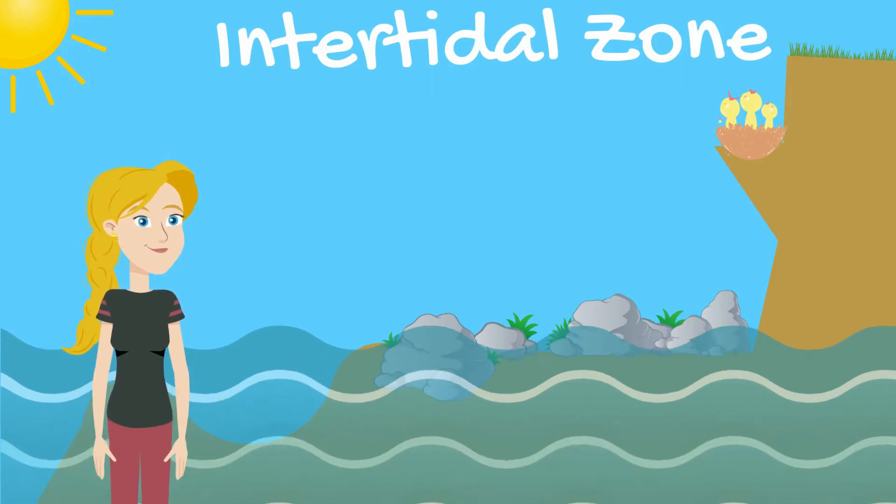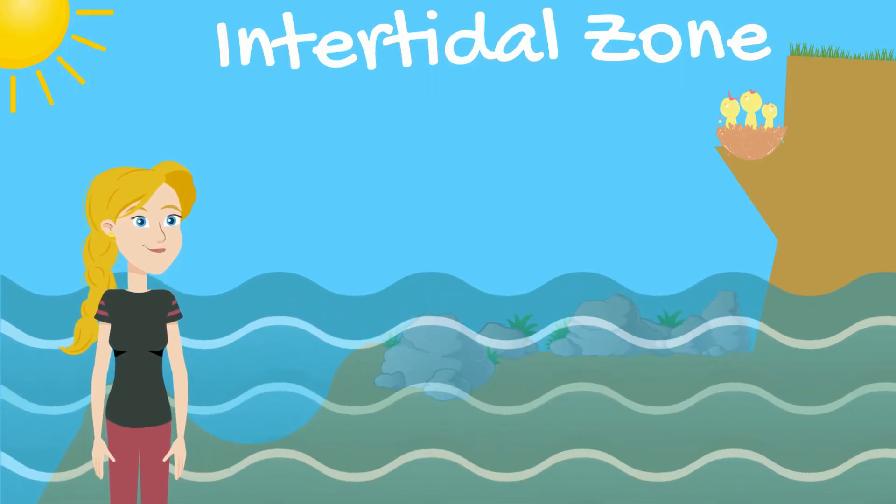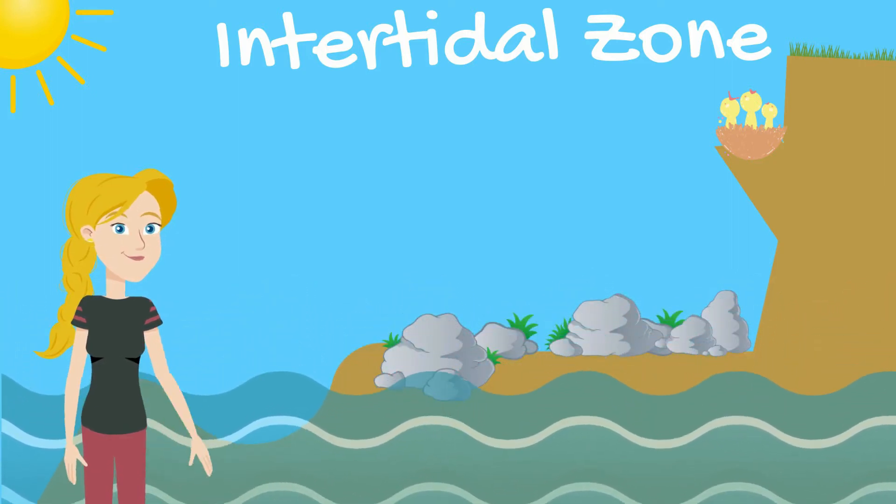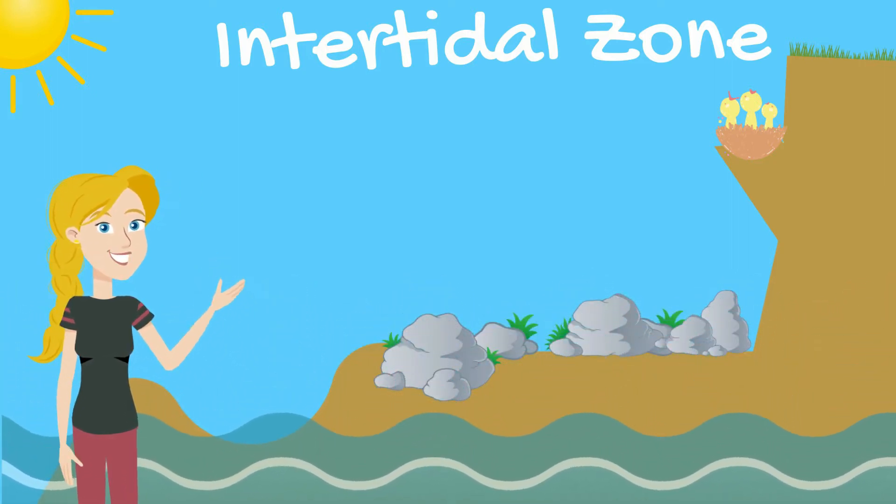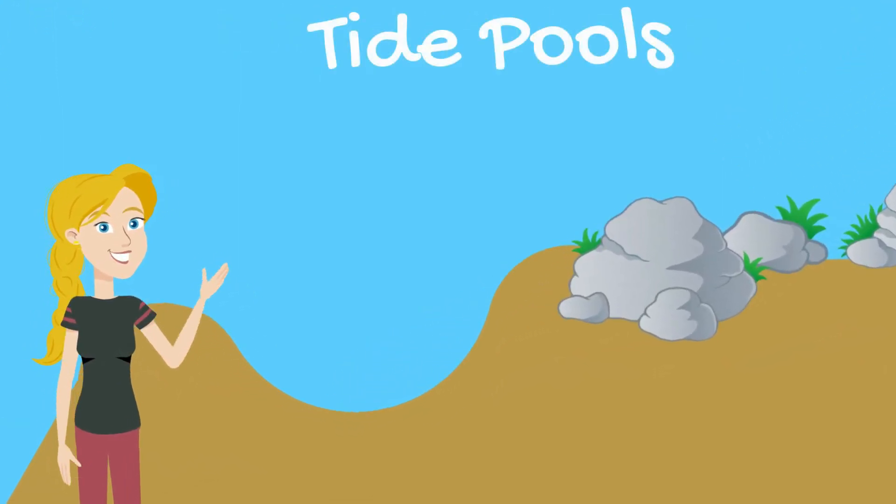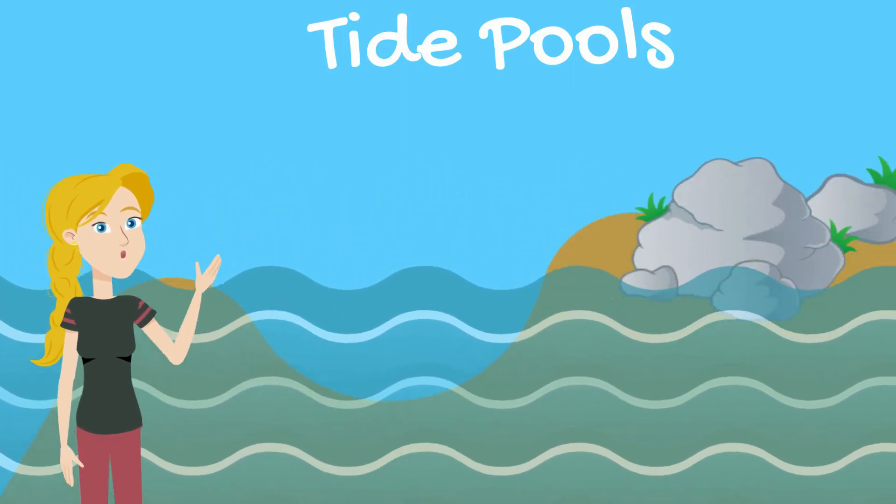At a high tide, the intertidal zone is covered with water. However, as the tide starts to fall, the shoreline begins to emerge and with it comes tide pools. Tide pools are areas that trap water into tiny little pools as the tide falls below them.